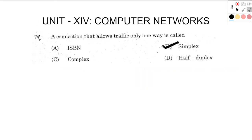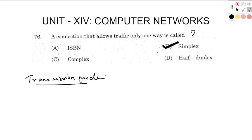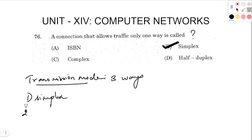First question: a connection that allows traffic only one way is called dash. So in this question, transmission mode — one data, one signal, one information passed. So what we do is transfer; there are three ways. Transmission mode has three ways: first one is simplex, half duplex, and full duplex.